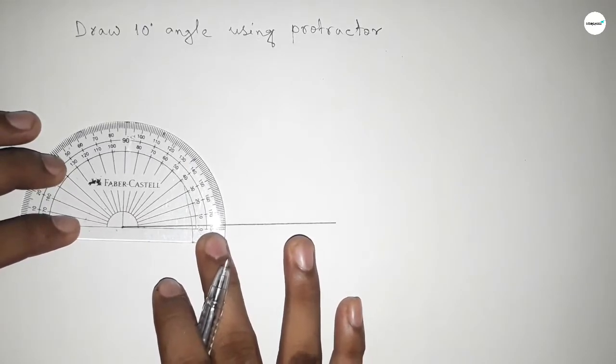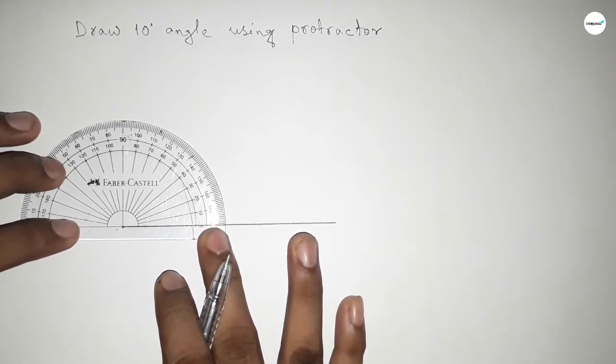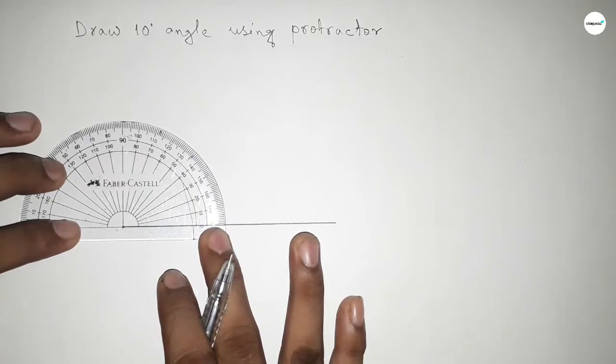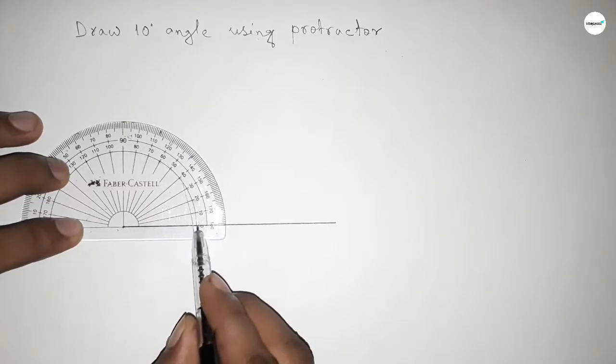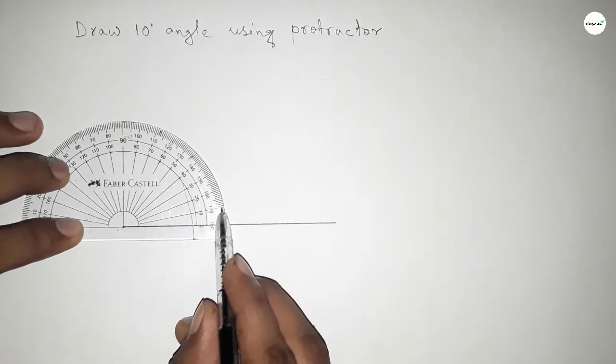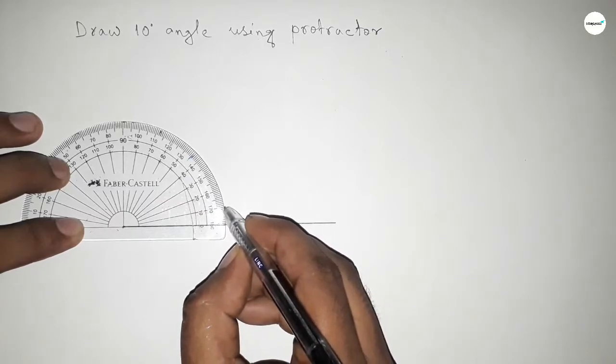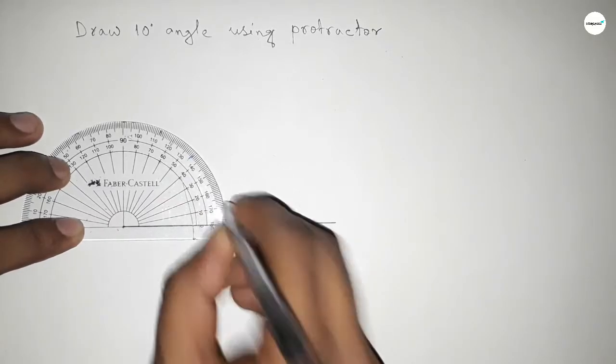Putting the protractor on the point perfectly, then counting the angle. So this line represents 0 degree and this is 10 degree. So this is 10 degree angle.